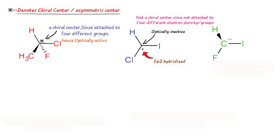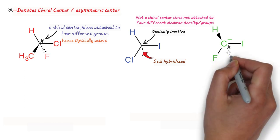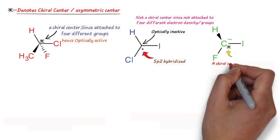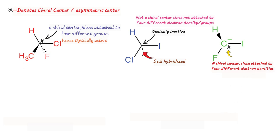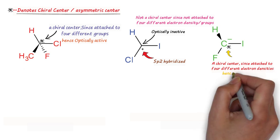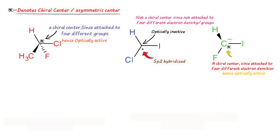In the third case, we have a carbanion in which the carbon carries a negative charge. This carbon is attached to four different electron densities: hydrogen, iodine, fluorine, and the electron density of the negative charge on carbon. Since this carbon is attached to four different groups or electron densities, it is optically active.